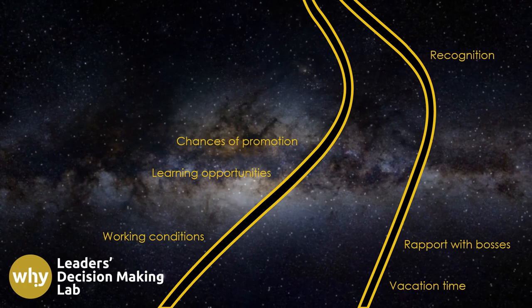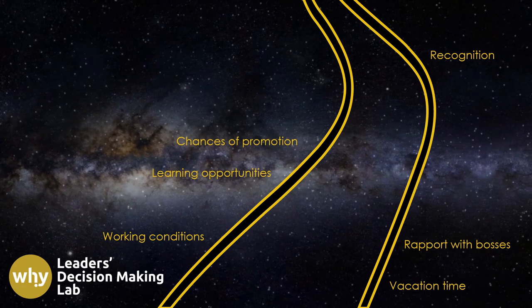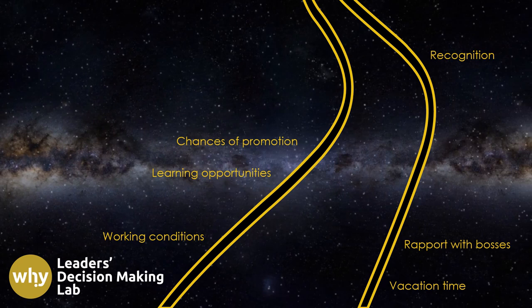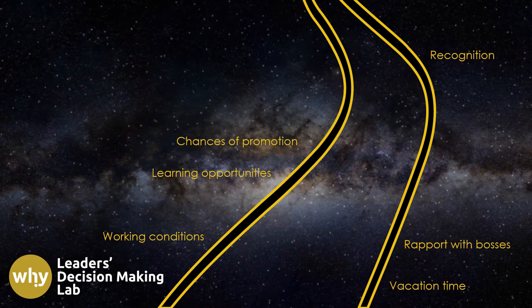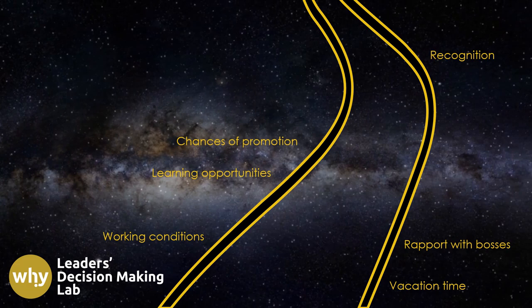Visualize a continuum with factors like working conditions, vacation time, learning opportunities, chances of promotion, rapport with bosses, recognition, wage levels, and the balance between effort and reward scattered along its path. Each factor, assigned different weight, duration, and impact by each individual, could tip the balance, creating a state of satisfaction or dissatisfaction at any given moment.